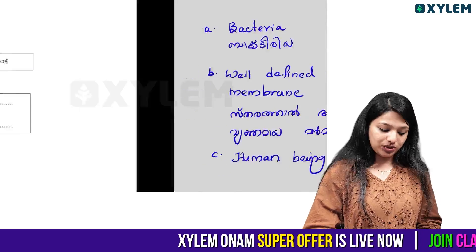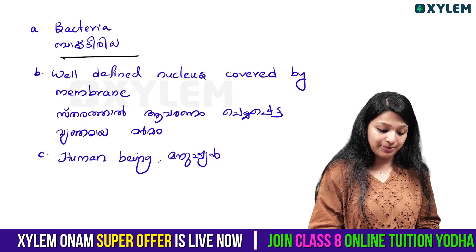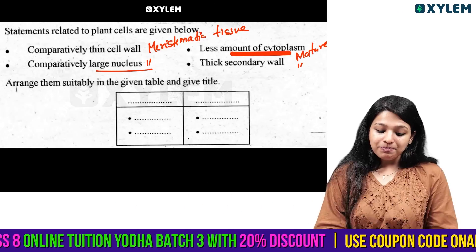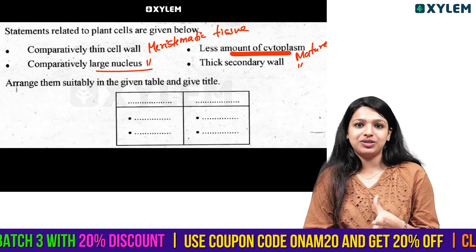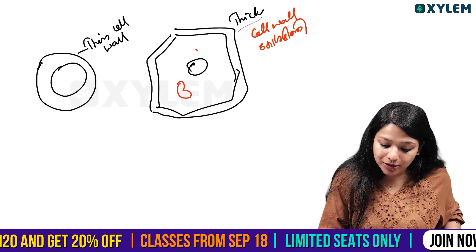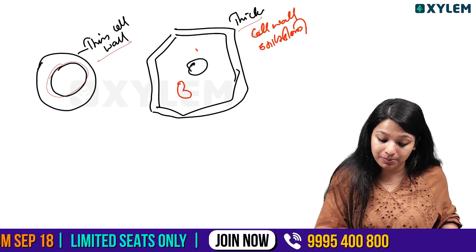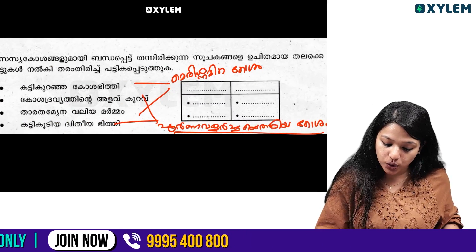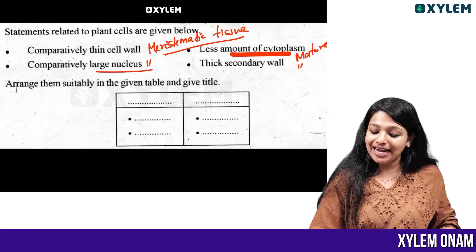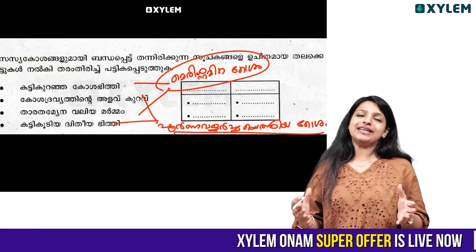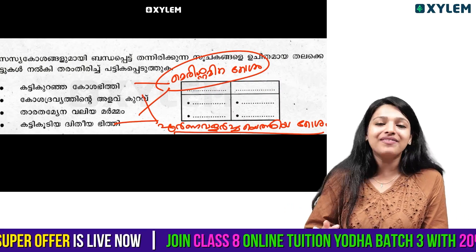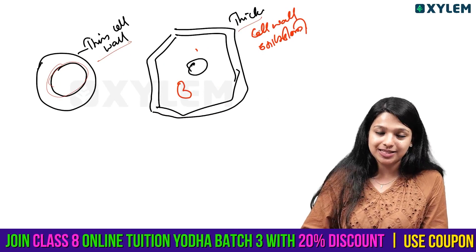Prokaryote and eukaryote are differentiated. Bacteria — called cyanobacteria — is prokaryote. We use human being and amoeba as eukaryote examples. Meristematic cell is called thin cell — it has a large nucleus.